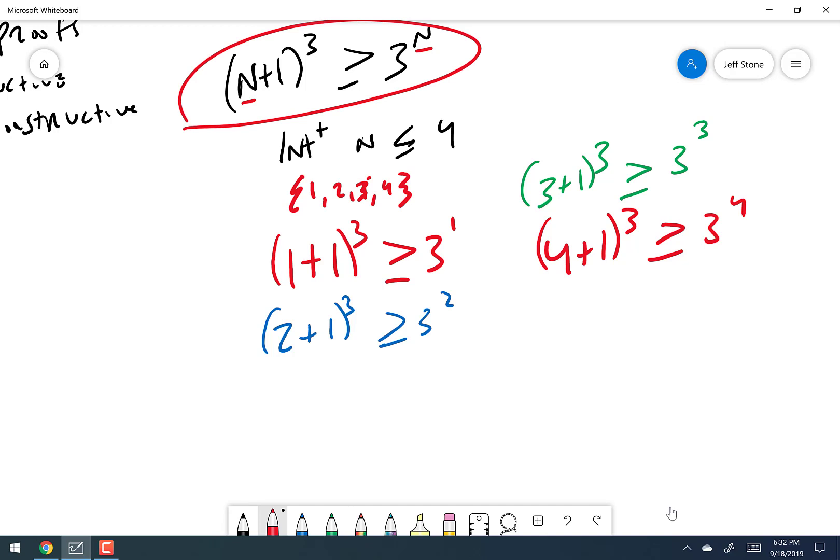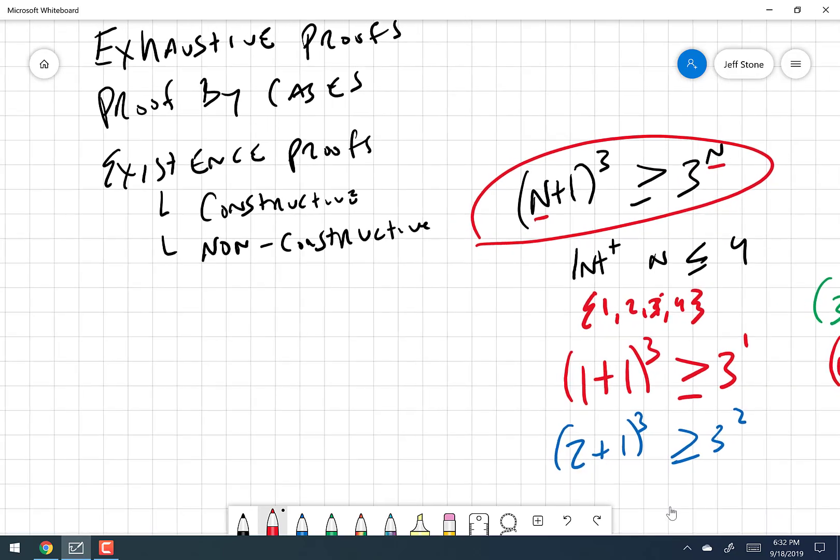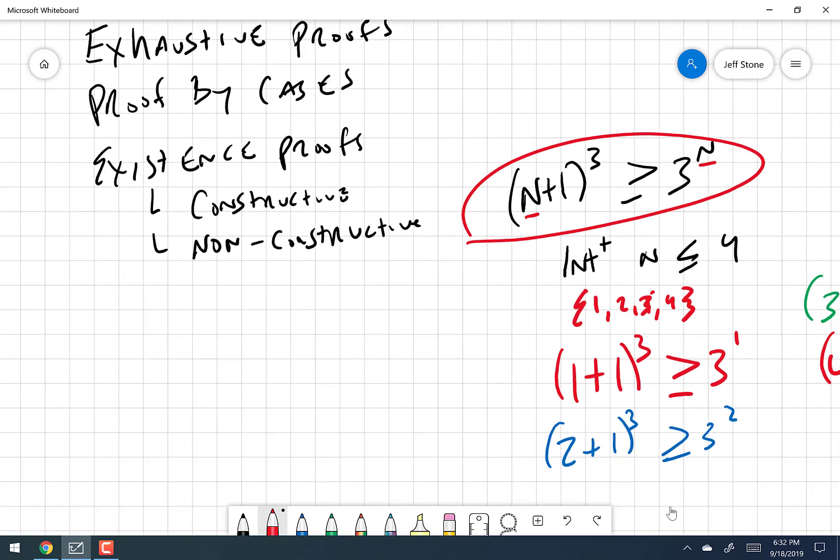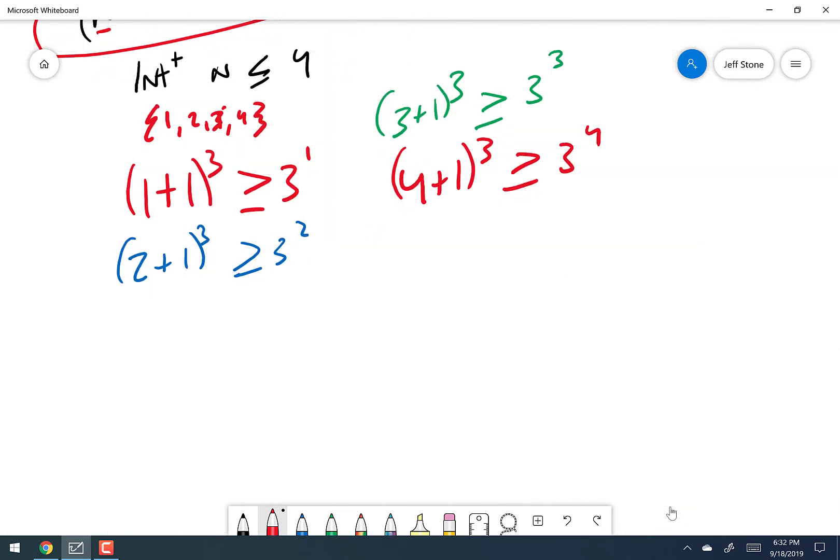That's it. We answer the question if all those are true, and we've done an exhaustive proof proving that this statement is true. Simple. That's all the time we really need to spend on it because it's a pretty simple idea, right? So the next one here. Proof by cases. This one's a little bit trickier, but it's not super hard.